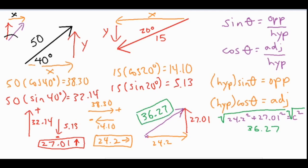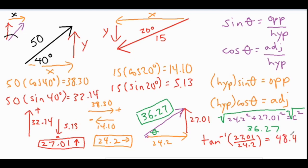That is our final magnitude if we piece all the vectors back together. The last thing you may need is an angle, which we call theta. You could use the inverse of sine, cosine, or tangent. I'll use inverse tangent: the opposite side is 27.01 and the adjacent is 24.2, so the inverse tangent of 27.01 over 24.2 gives us an angle of 48.14 degrees.